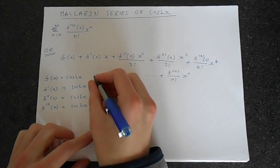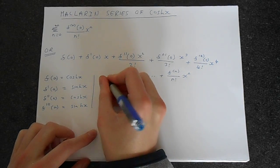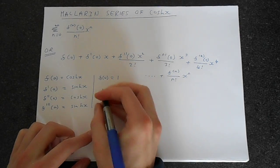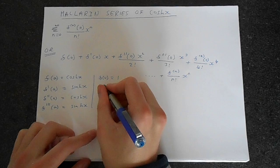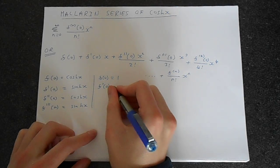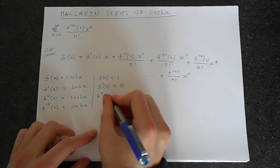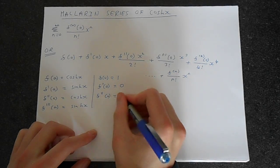So now let's evaluate this at 0. The hyperbolic cosine of 0 is 1, it's very similar to normal cosine. And then the derivative, well, that's going to be 0. The double derivative, that's going to be 1.